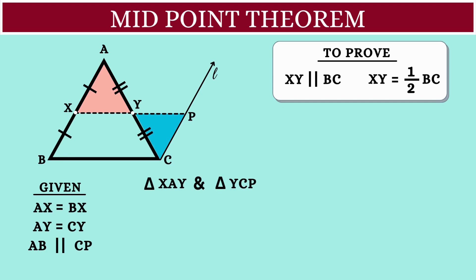Here angle XAY is equal to angle YCP. These two are the interior alternate angles for the two parallel lines AB and CP.